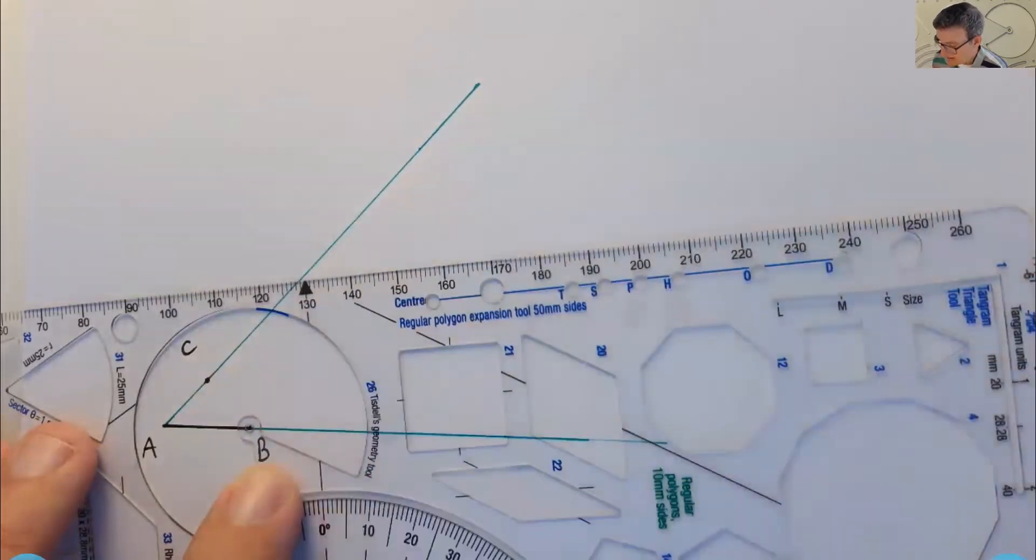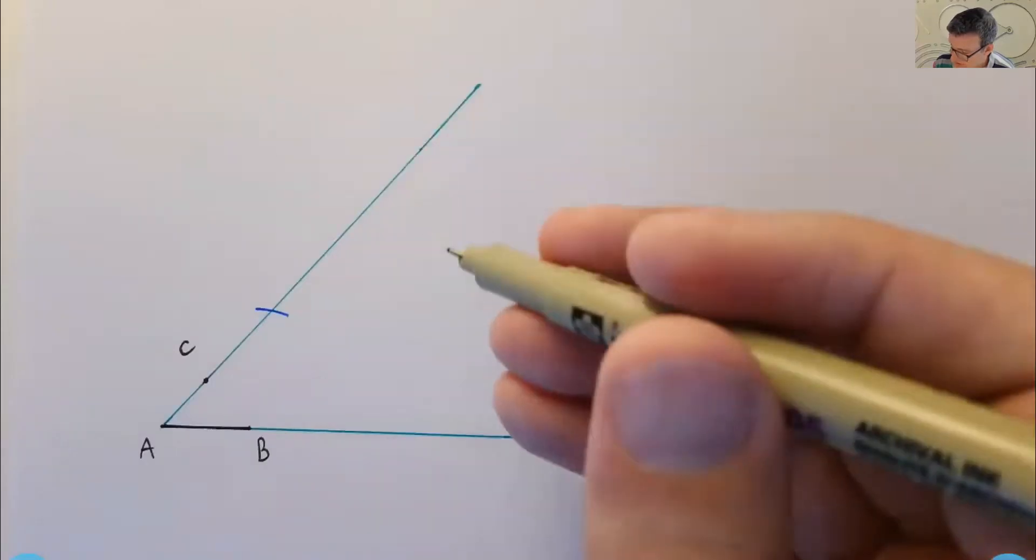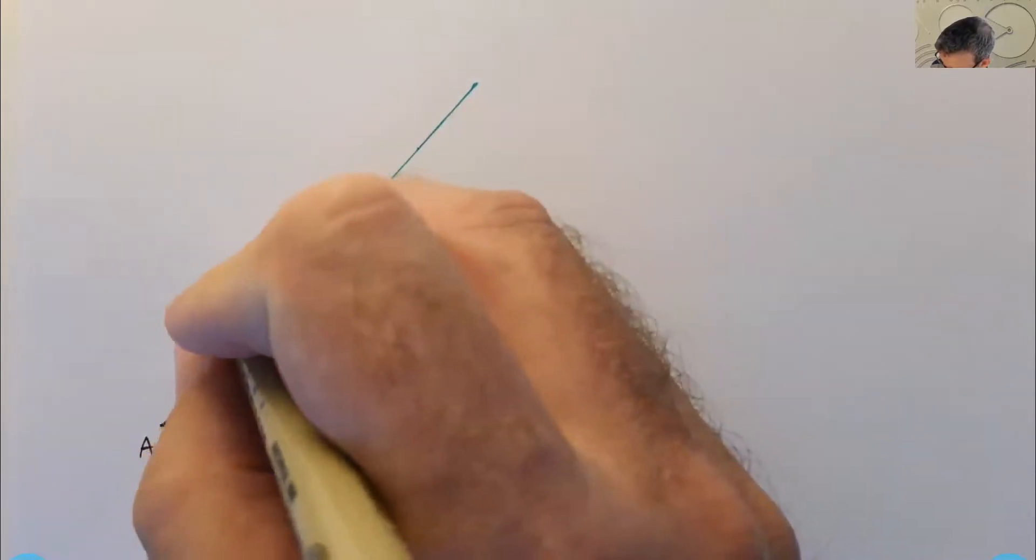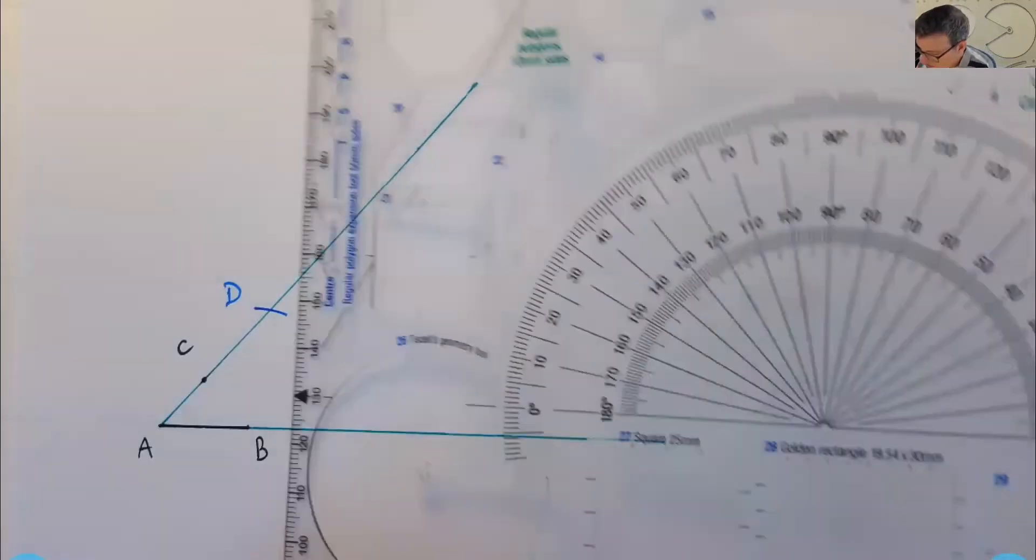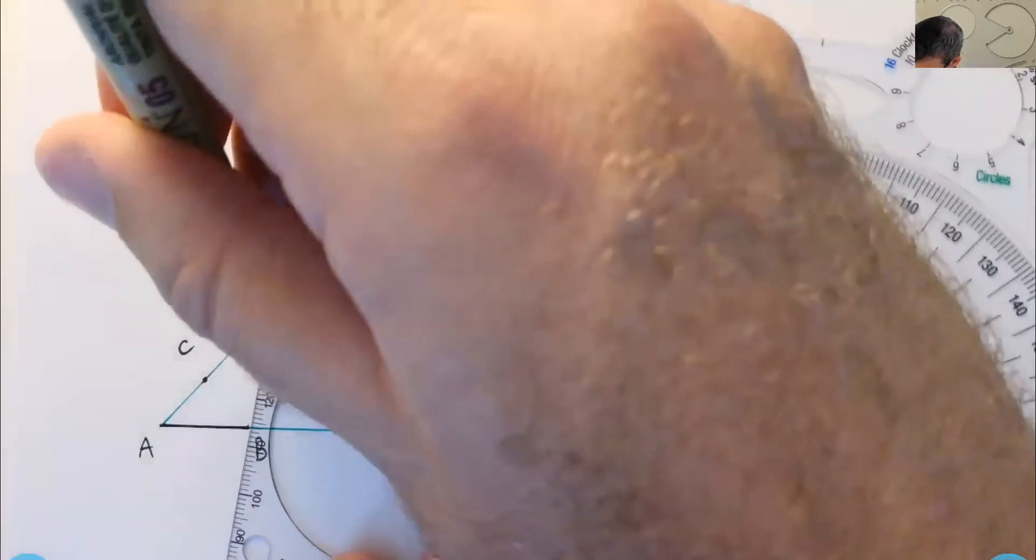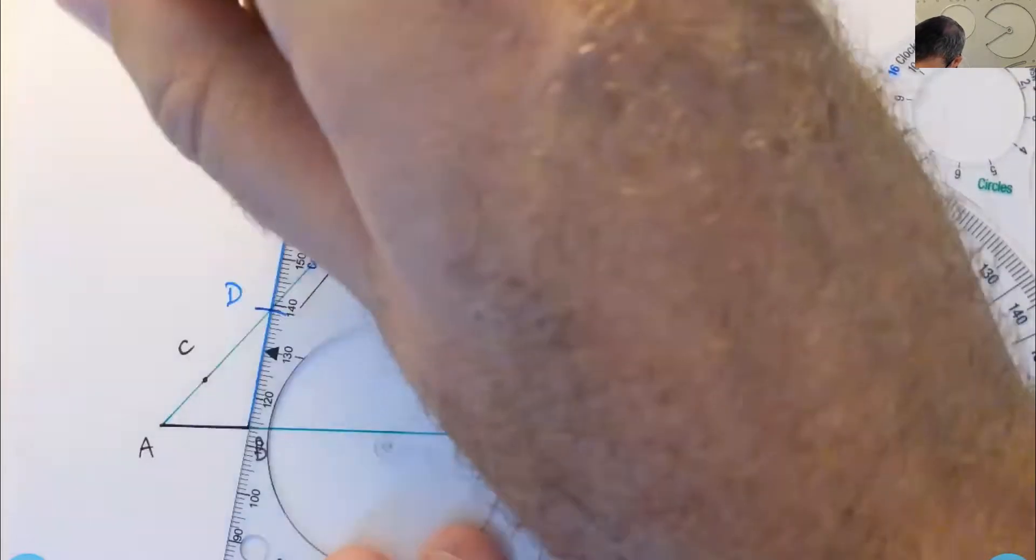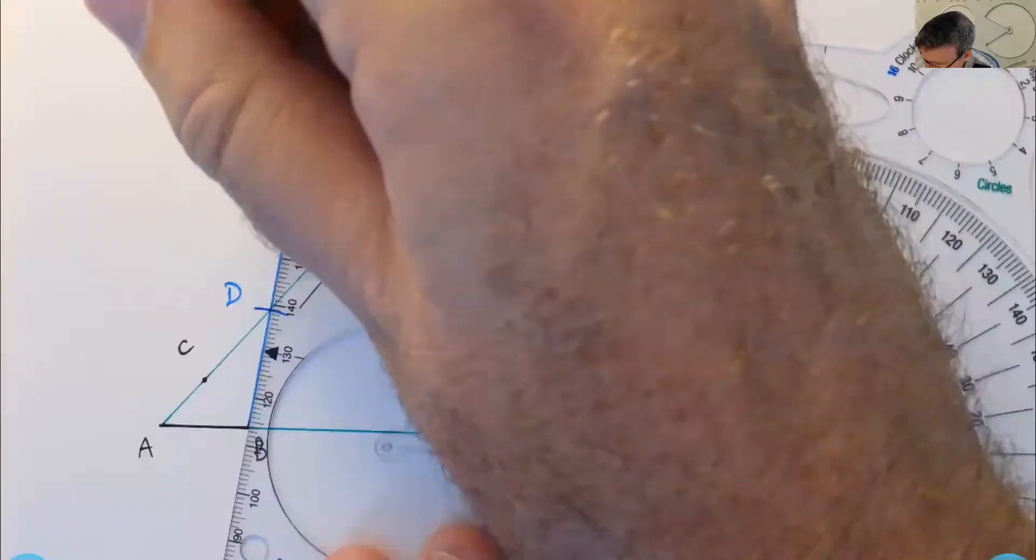So I'm going to center the circle arc at B and it's going to cut this extended ray, if you like, AC here. So I've got a new point. Let's call that... What are we up to? D. And I'm going to draw a line segment through B and D. Okay. So I'm going to continue that along.